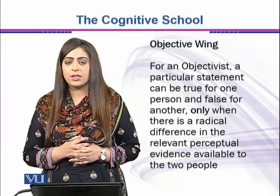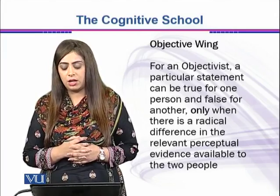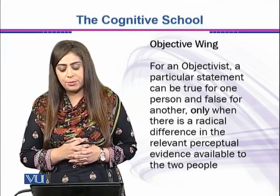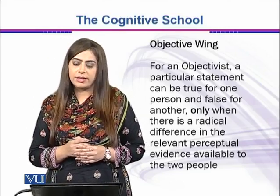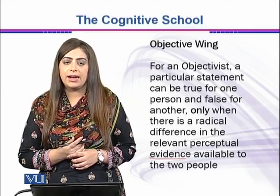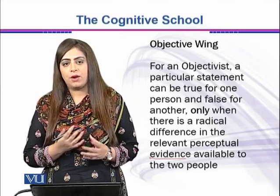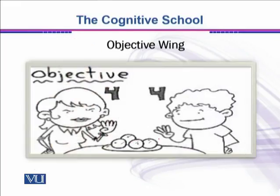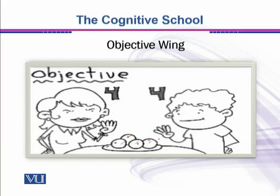The objective wing says that for an objectivist, a particular statement can be true for one person and false for another only when there is a radical difference in the relevant perceptual evidence available to the two people. The focus area is the evidence. If the evidence is available, that thing can be true or false for one or more people. Looking at this picture, there are four objects here which are countable and there is evidence available, so no one can say these are three or five — this is objective reality, supported by evidence.